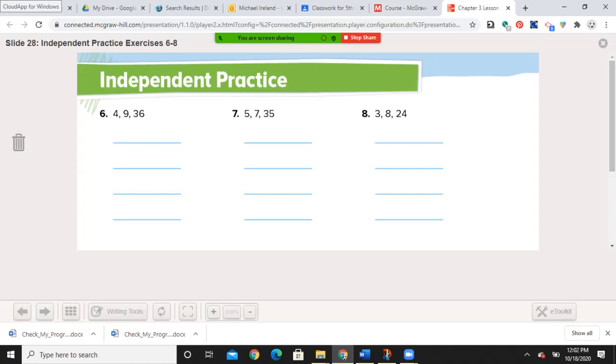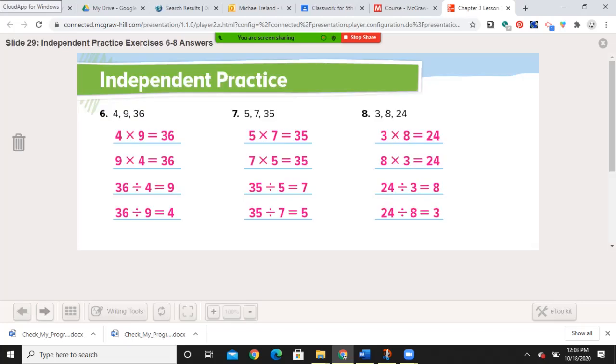And this one, they're not going to give you the visual. They want you to go ahead and write the fact families. Again, I'll ask you to pause the video in a moment. Write down the fact families for all three sets of numbers. Welcome back. Let's see how you did. In number 6, you need a 4 times 9 is 36. 9 times 4 is 36. 36 divided by 4 is 9. And 36 divided by 9 is 4. Each of these equations have the same three numbers. Over on number 7, we had 5 times 7 is 35. And 7 times 5 is 35. 35 divided by 5 is 7. 35 divided by 7 is 5.